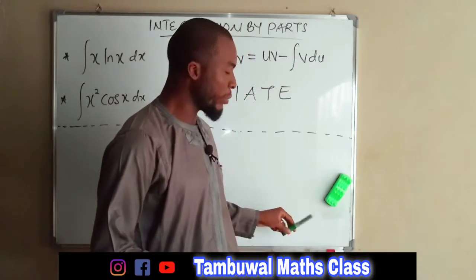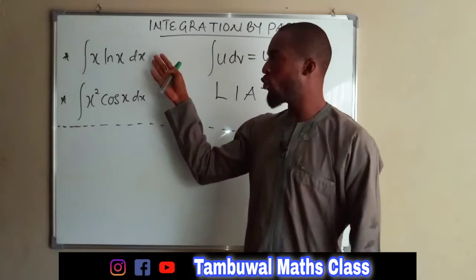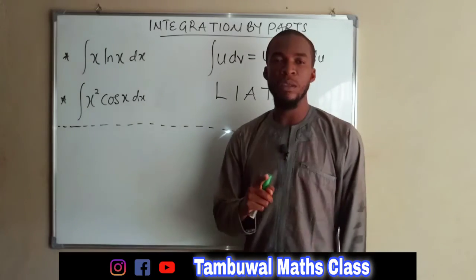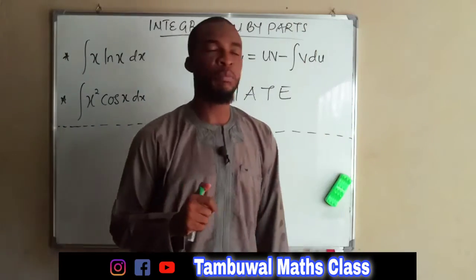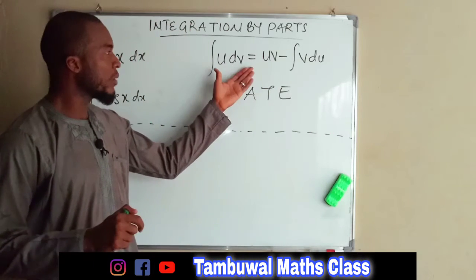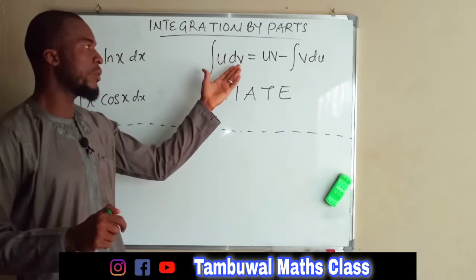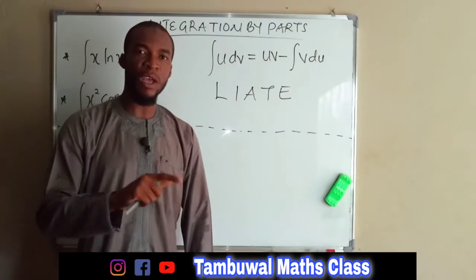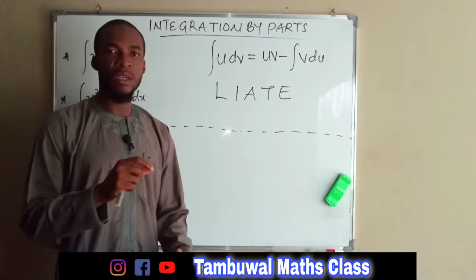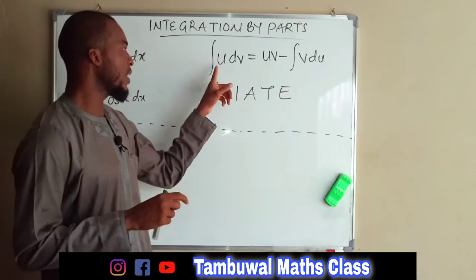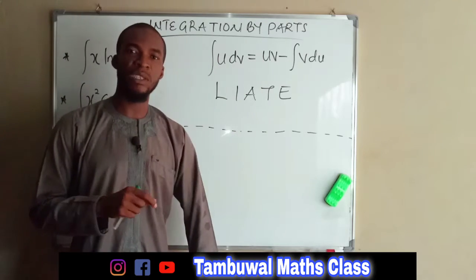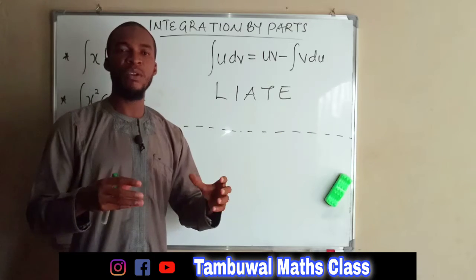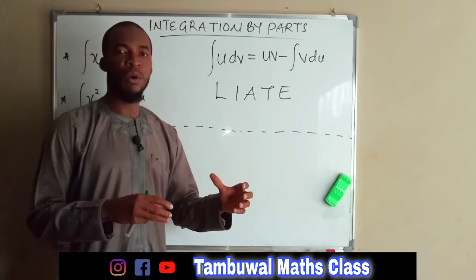Still on to integration by parts. I have two problems here which I want to solve. Whenever you are given a problem under integration by parts, always remember your formula, which is the integral of U dV is equal to UV minus the integral of V dU. Secondly, you have to decide which function to set as U and which to set as DV. This is the acronym which will always guide us through how to choose our U.